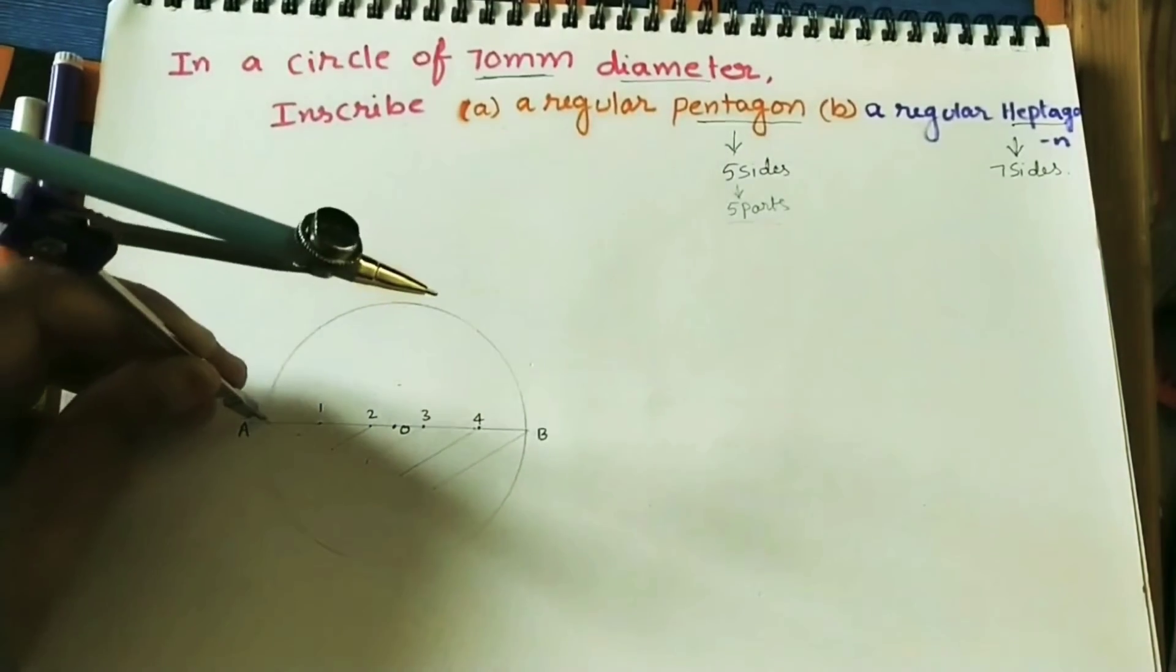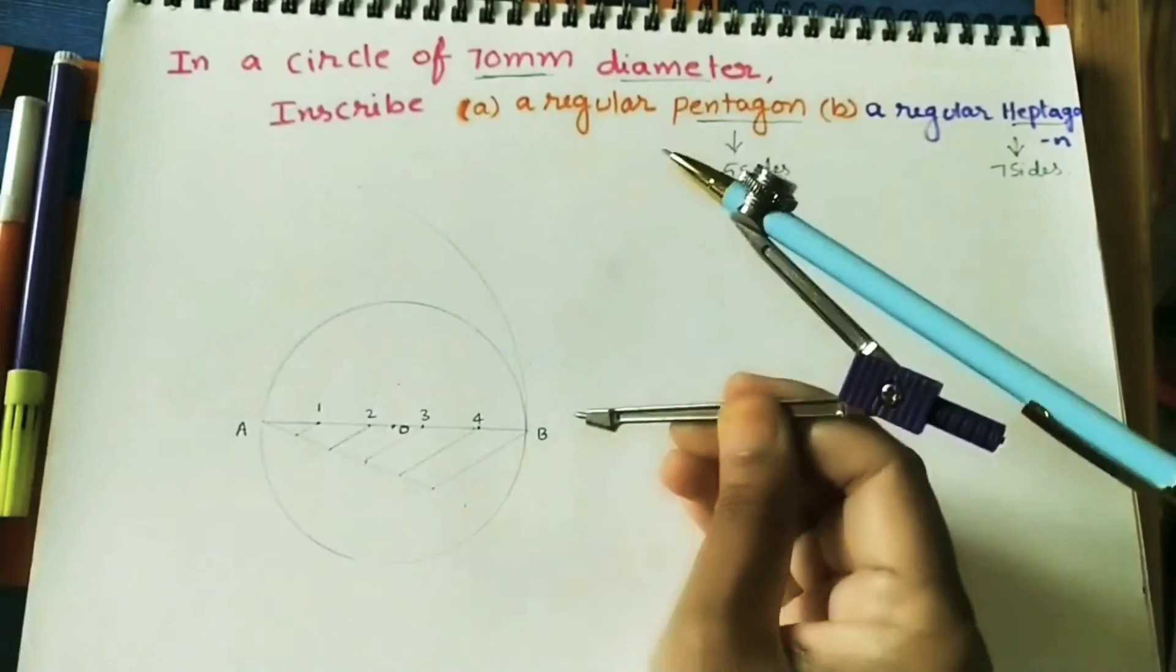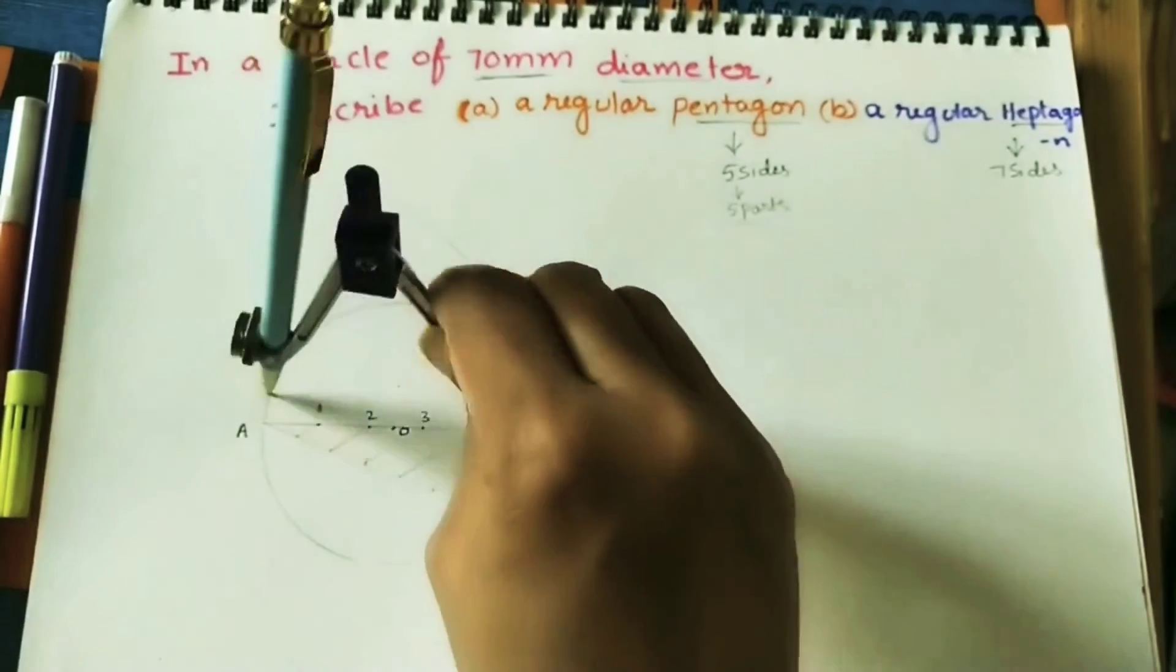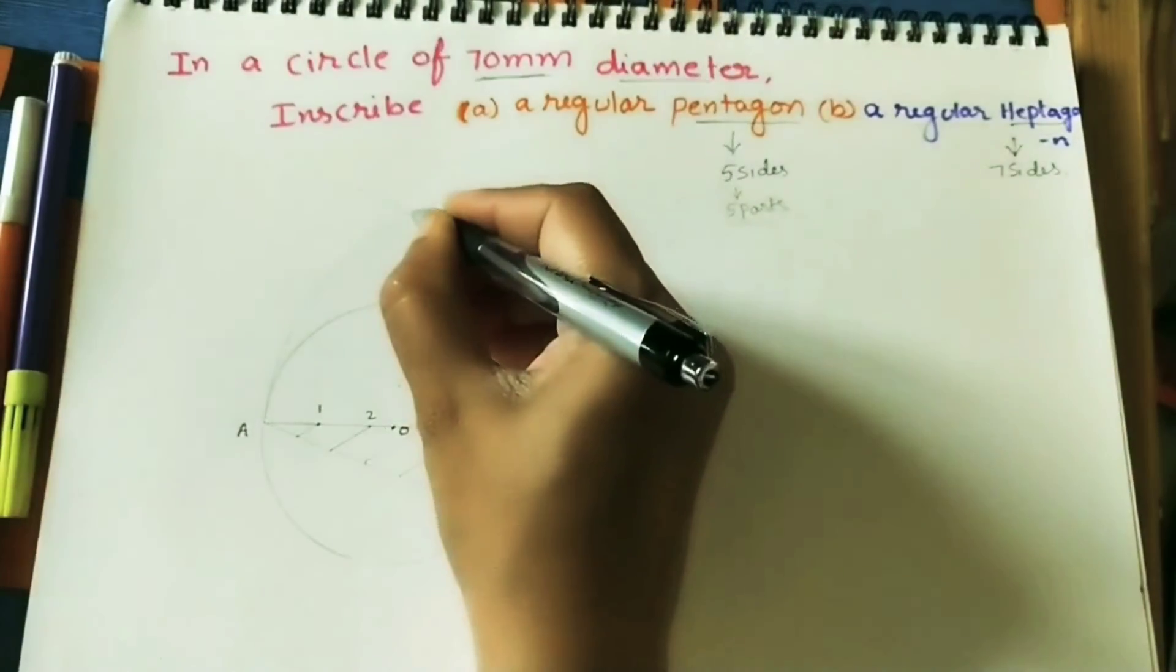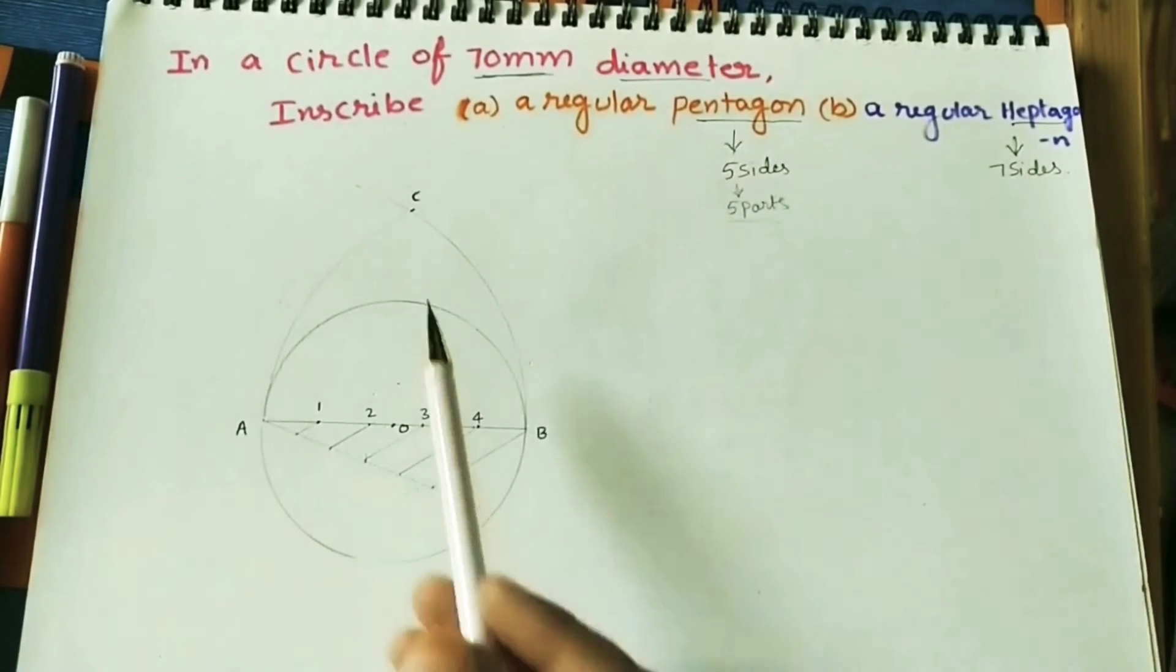You take A as center, AB as radius. Just do 1 arc up to some length. Similarly, B as center. Do another arc with the same radius. Take the intersection point C.